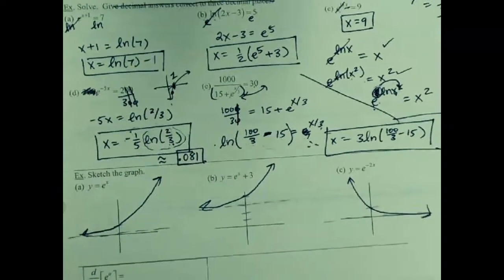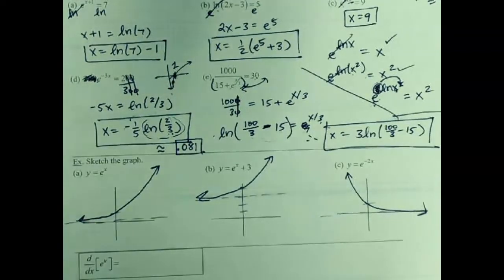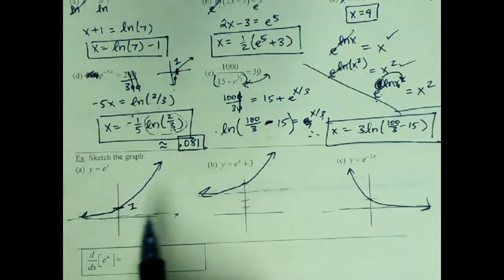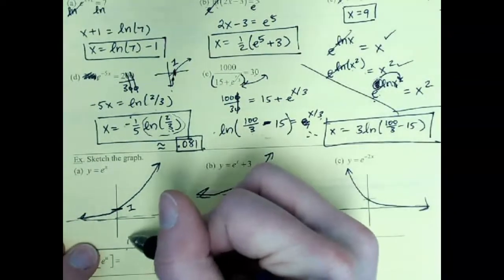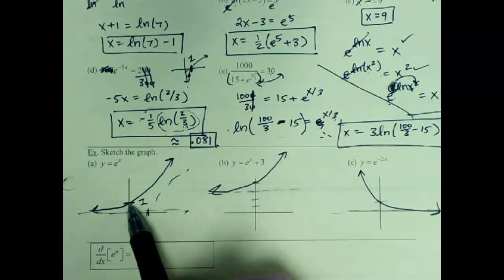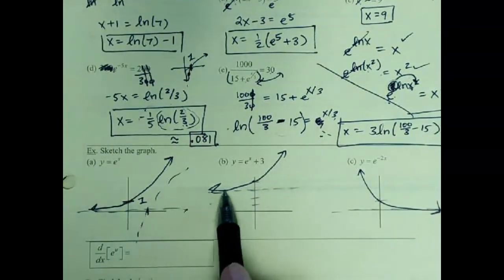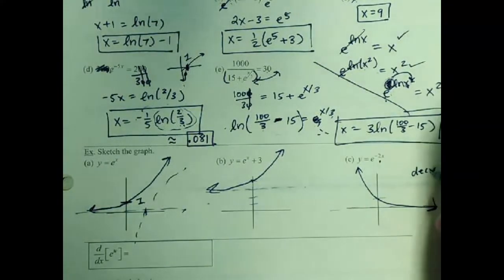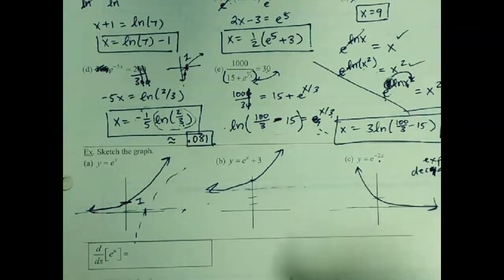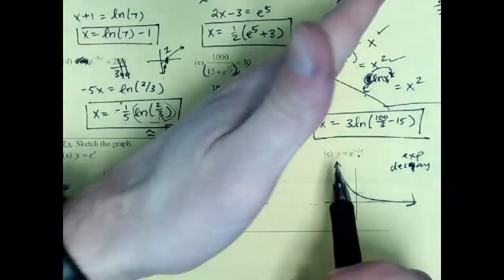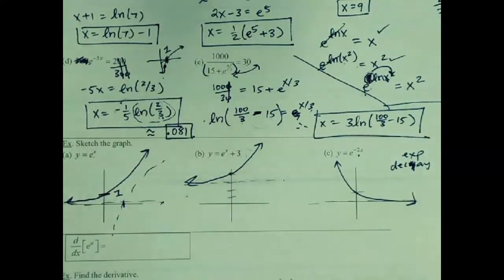Solving those exponential and log equations should be okay. Here's the graph of your exponential — it typically has a y-intercept at 1 and a horizontal asymptote. Remember, it's the inverse graph of your natural log. The natural log has a vertical asymptote and x-intercept at 1; the inverse function has that reflection over y equals x, a y-intercept, and a horizontal asymptote. One graph shifted up 3 has asymptote at 3 and intercept at 4. The one with horizontal reflection is exponential decay; the first two are exponential growth.